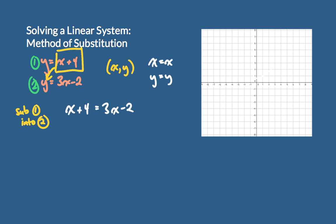We're going to solve this equation for x, getting x's on one side and numbers on the other. Subtract 3x from both sides, subtract 4 from both sides — we get negative 2x on this side and negative 6 on the other side. Divide both sides by negative 2 and we get x equals 3. We know the solution happens when x equals 3, because that's when y equals y after substituting.